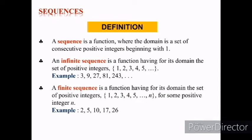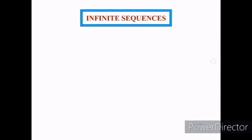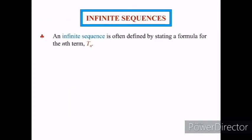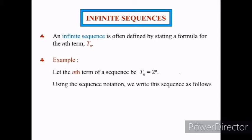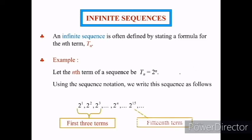On the other hand, a finite sequence is a function having for its domain the set of positive integers 1, 2, 3, 4, 5, until reaching n, for some positive integer n. An infinite sequence is often defined by stating a formula for the nth term, t(n). For example, let the nth term of a sequence be t(n) = 2n. Using the sequence notation, we write this sequence as follows. As you can see here, the first three terms, the t(n) term, and the 15th term can be seen in the sequence.